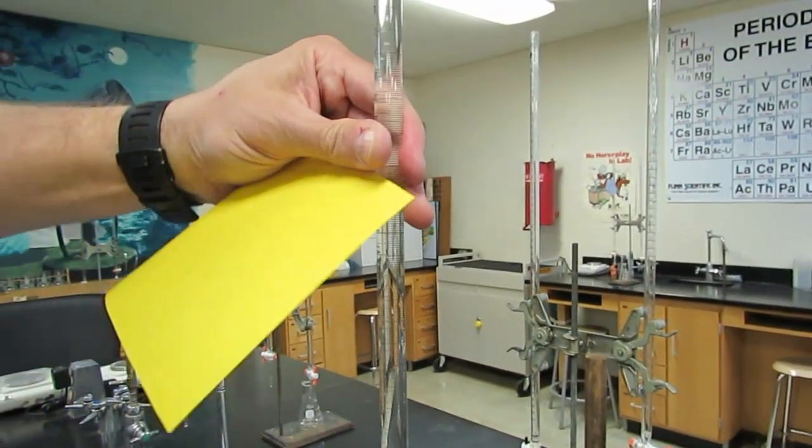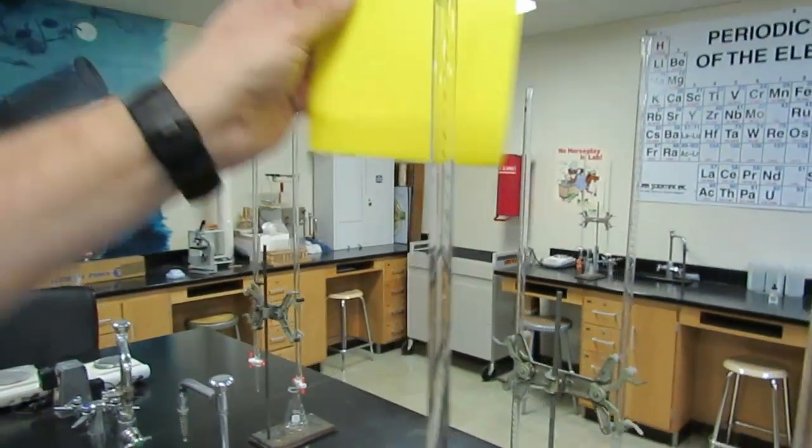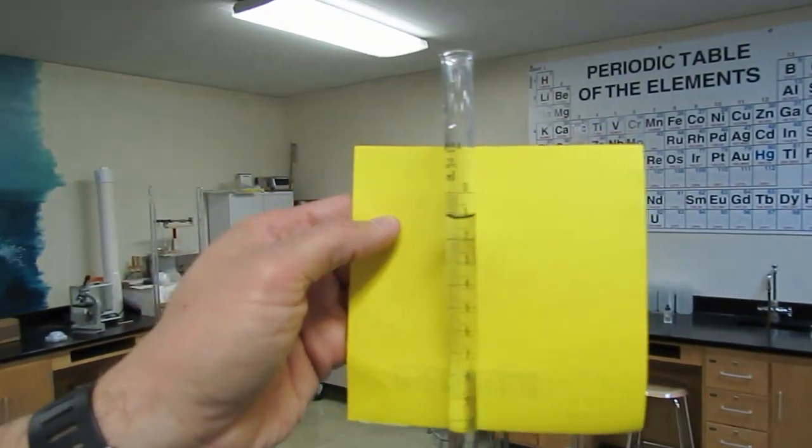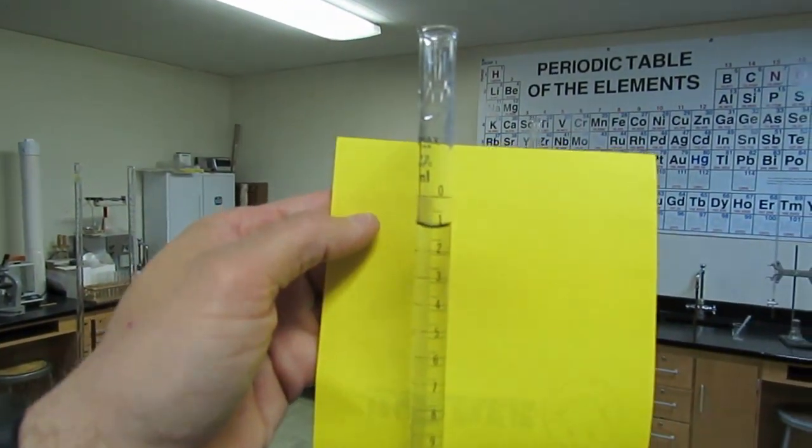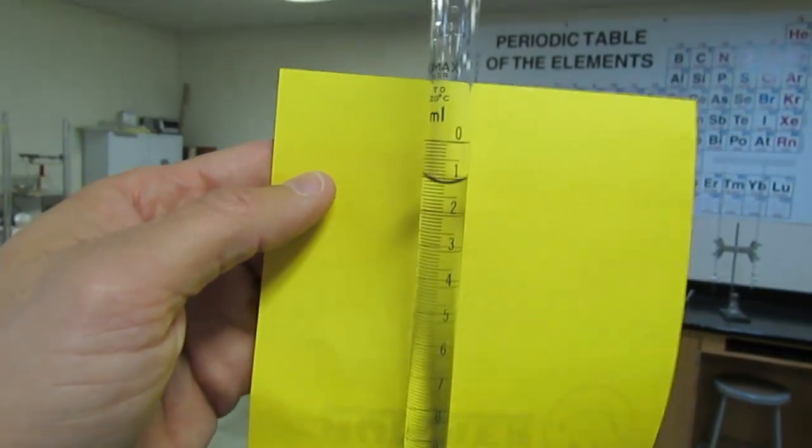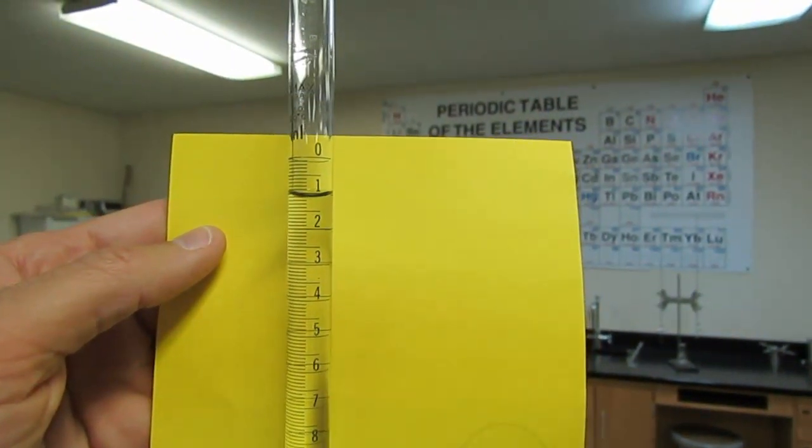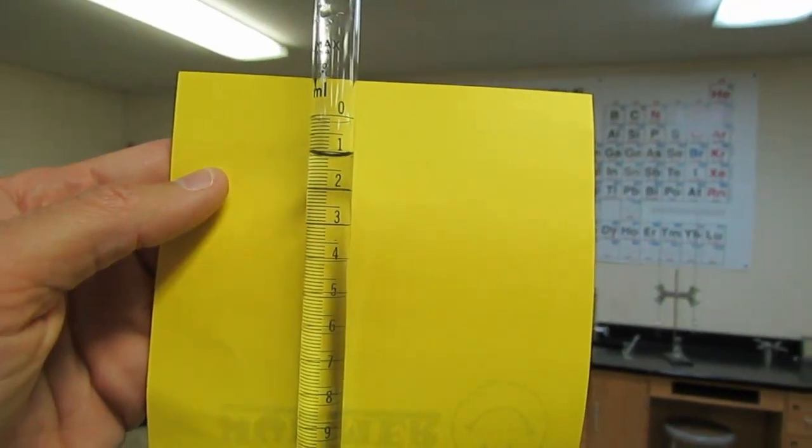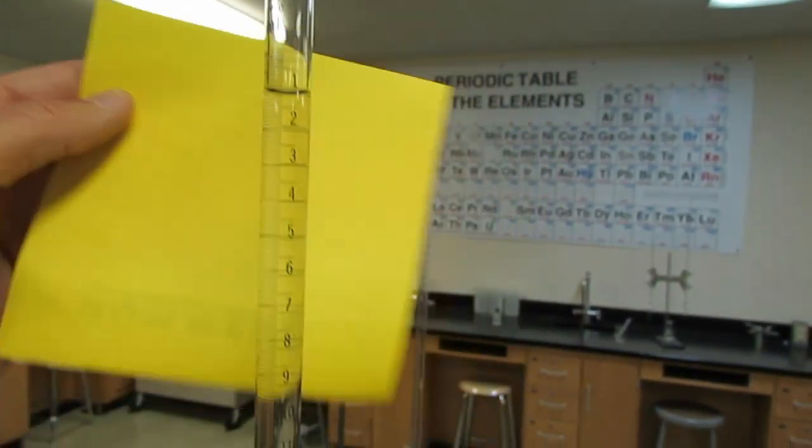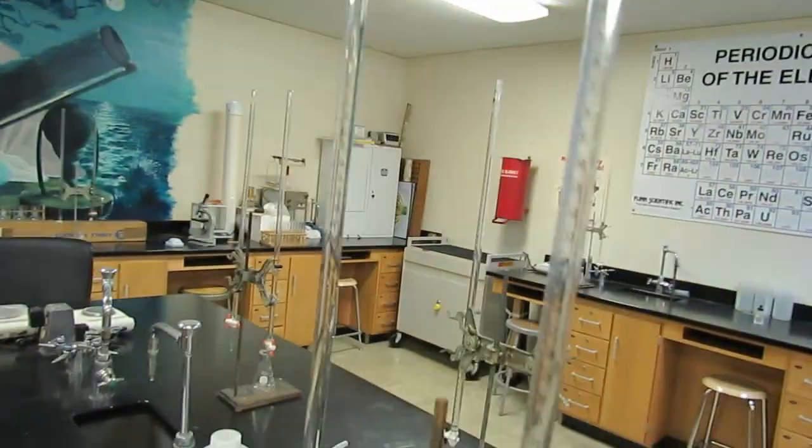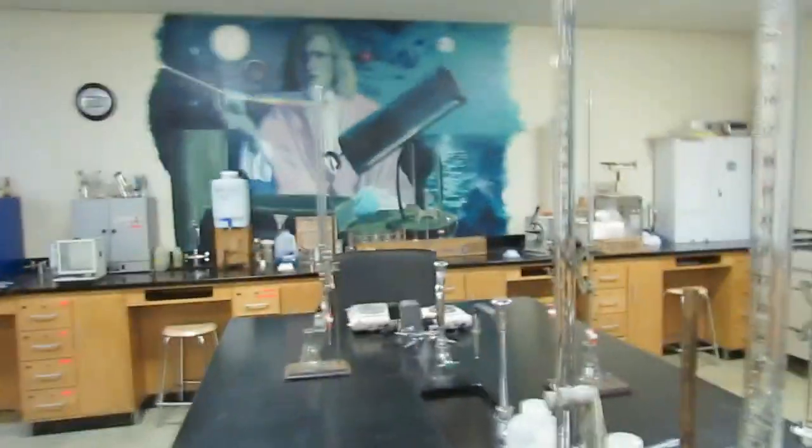For my initial acid reading, let me turn the burette so we can read that. It looks like that's going to be between one and two. So I'm going to call it 1.16. So I have my initial acid and my initial base value.